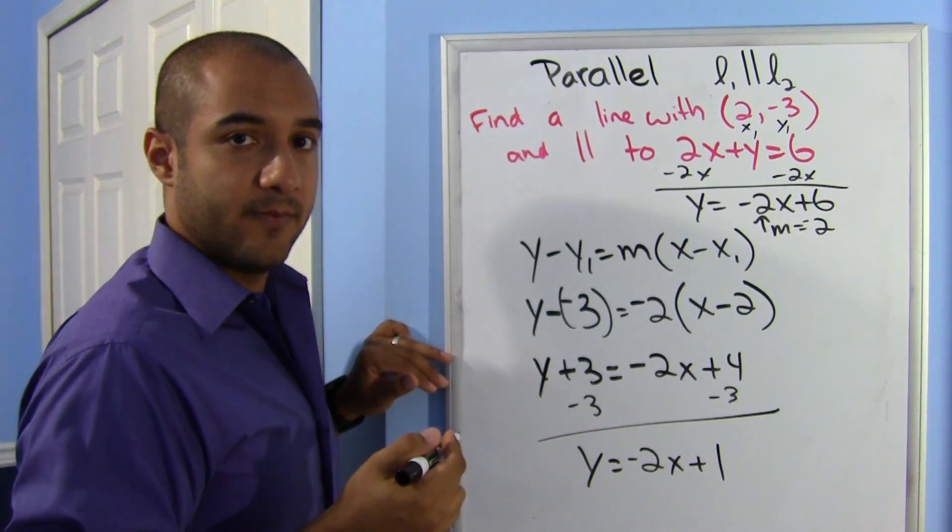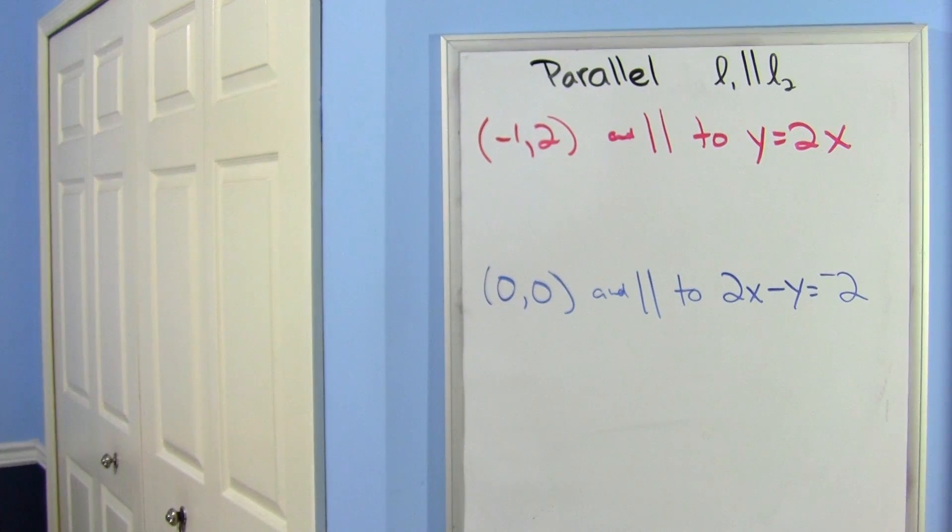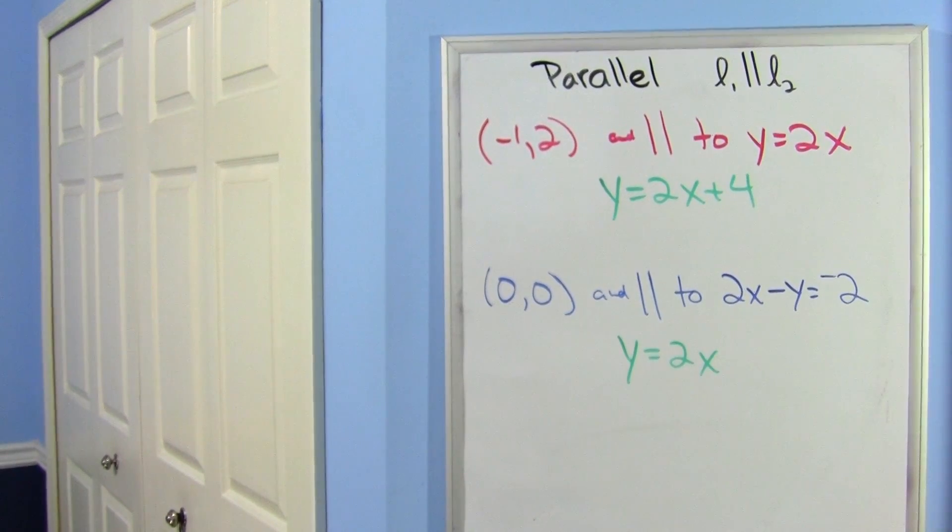Let's try some out. Alright, go ahead and find a parallel line that goes through these points and is parallel to the given equation. Pause the video and I'm going to show you the answers in 3, 2, 1. Here are your answers. I hope you got them right.